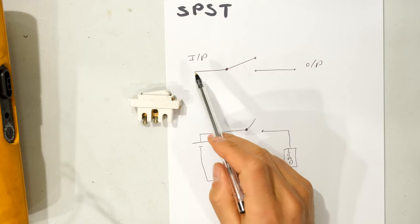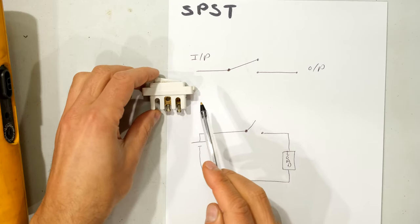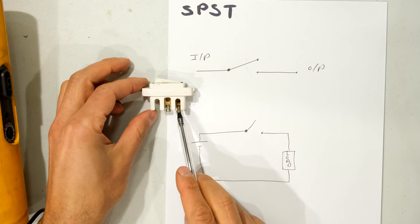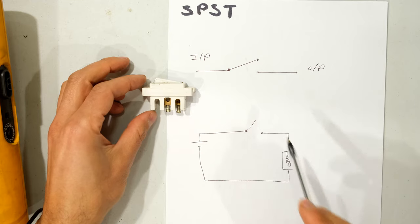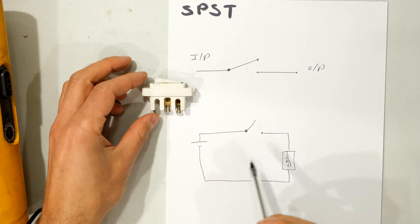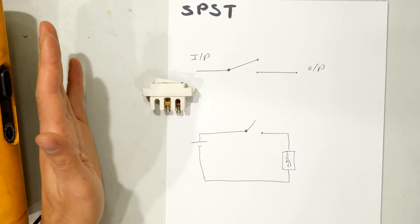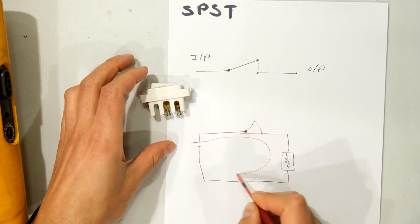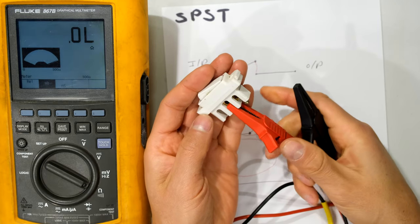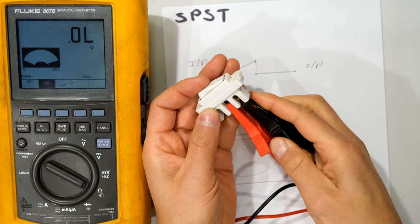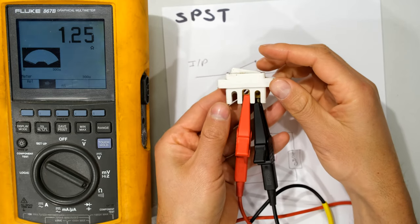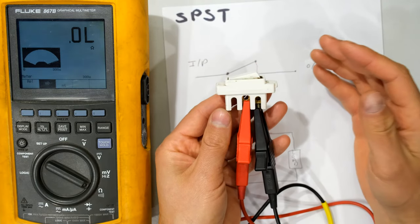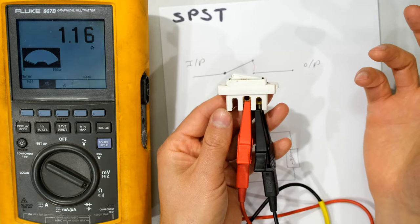With the single pole single throw we have one input and one output. Here is an example of a single pole single throw switch — this can be considered the input and that can be considered the output. The switch can only open and close a single circuit. At the moment it is open and no current is flowing. When I close the switch I will effectively short out those terminals and current can therefore flow. Testing with a multimeter: you can see the switch is already closed, and if I open it the meter says open circuit, and when I close the switch it's a dead short.